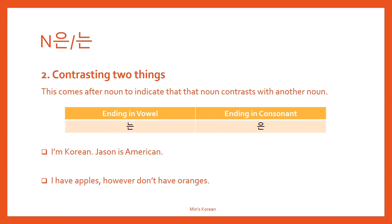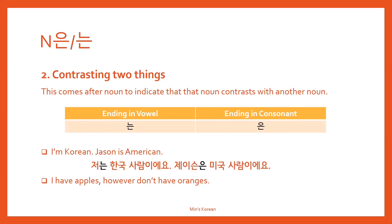Look at the example: 'I'm Korean. Jason is American.' So I'm Korean and Jason is American — it's a contrast. So you can say 저는 한국 사람이에요. And Jason은 미국 사람이에요.